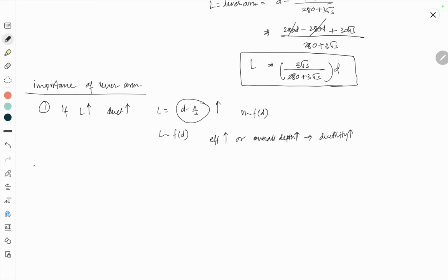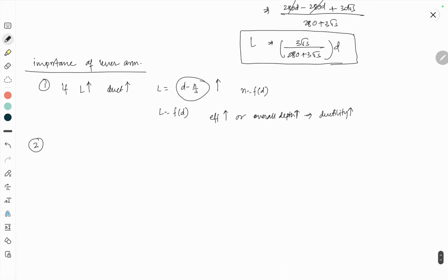Point number two: if lever arm is decreasing, or you can say small d decreasing, or capital D decreasing - capital D means overall depth - then material should be brittle.